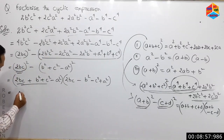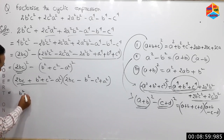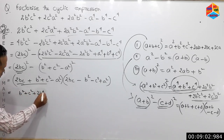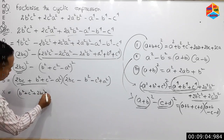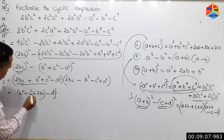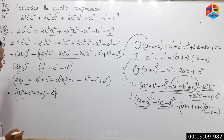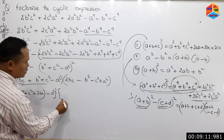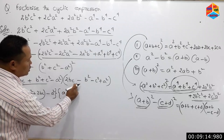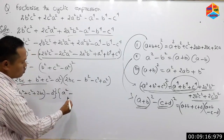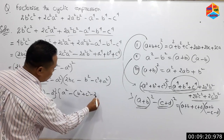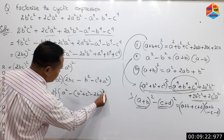B squared plus c squared plus twice bc is equal to minus a squared. Now we have to write a squared. C is equal to minus b squared plus c squared minus twice bc equals b.